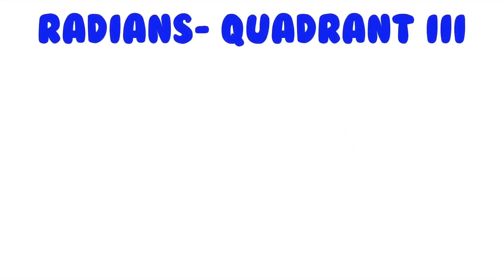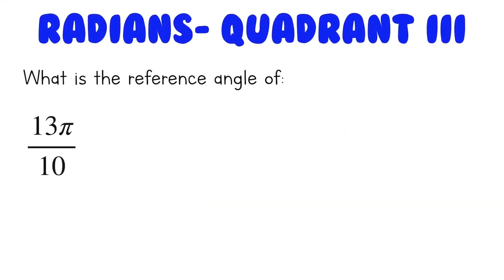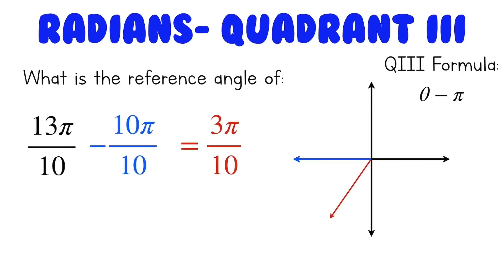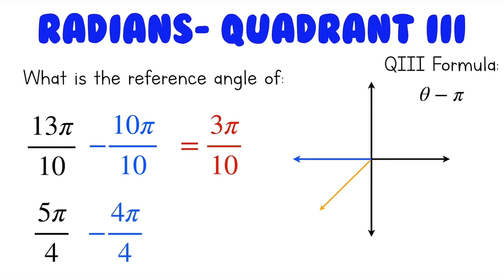What about the third quadrant? What is the reference angle of 13 pi over 10? To find the reference angle of an angle in quadrant 3, it's just your angle minus pi. So we'll do 13 pi over 10 minus 10 pi over 10, which gives us 3 pi over 10. What about 5 pi over 4? We'll do 5 pi over 4 minus 4 pi over 4, which is pi, to get a reference angle of pi over 4.